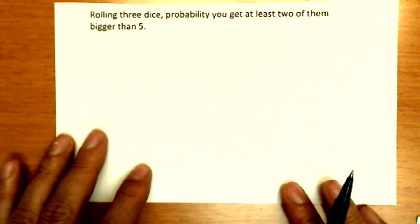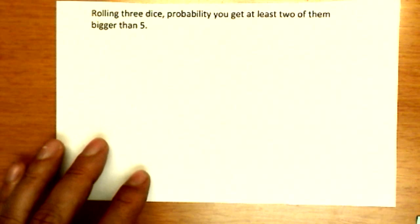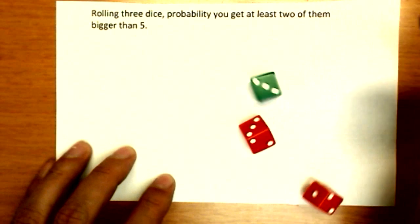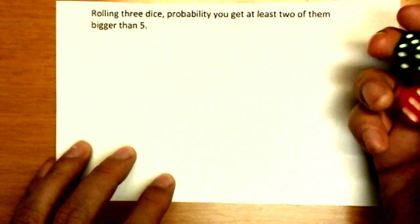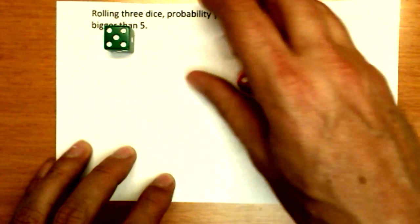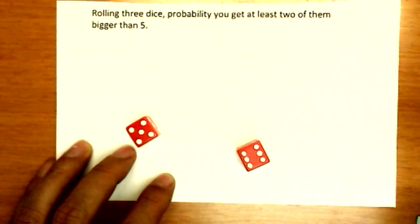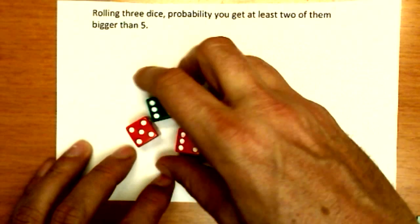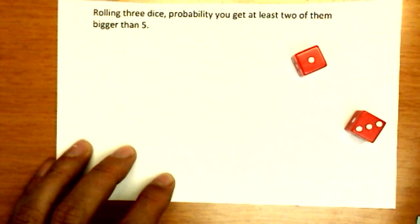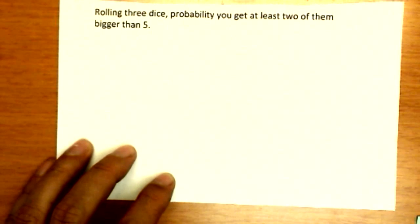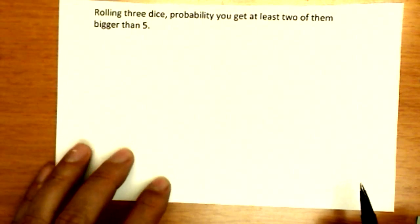Now let's try one where the probabilities are not equal on every branch of the tree. Rolling three dice, what's the probability you get at least two of them bigger than five? Okay, none. Not too lucky on that roll. There we go, I got one. So so far it's 50 percent. Oh, look at that. Six, six, five. A lucky roll. So I'm two out of three and so on. You can empirically come up with a probability if you did that a hundred times and kept track of your results.